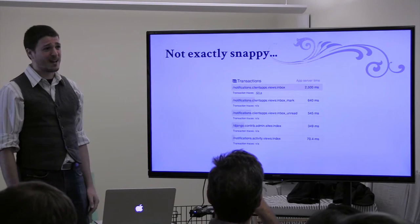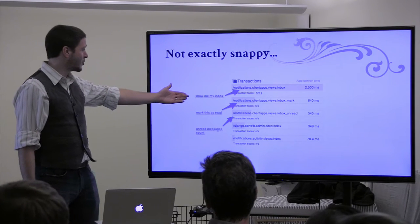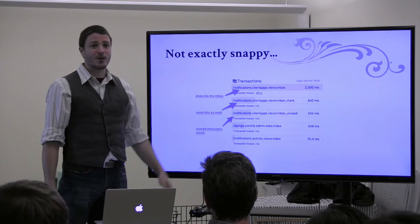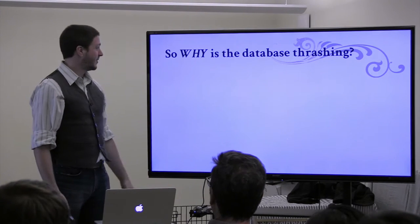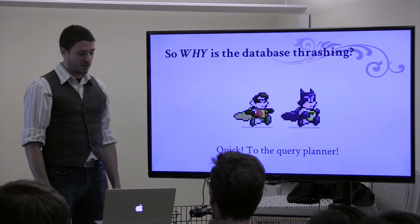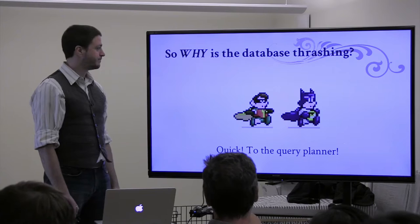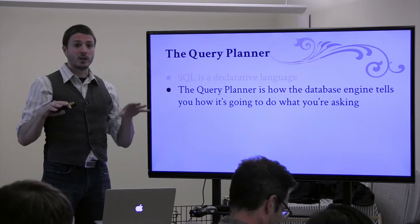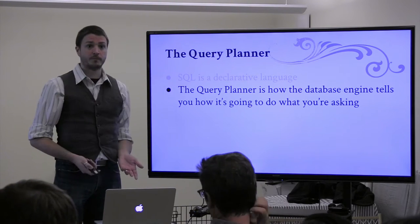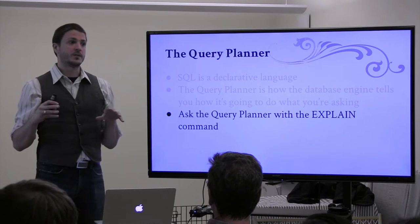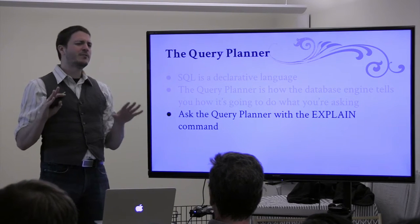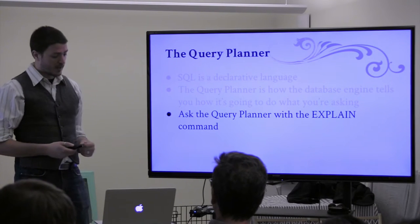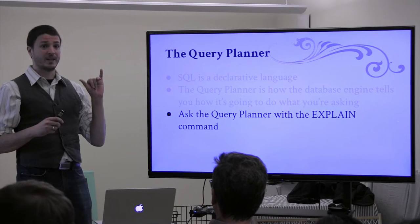The service wasn't handling tough things — just 'show me my inbox,' 'mark this as read,' and 'how many unread messages do I have?' and those were our average service times. This is bad. To find out why the database was thrashing, you have to go to the query. SQL is a declarative language — you tell it what you want and it figures out the best way to do it. The SQL engine gives us a query planner interface: you invoke it by prefixing any query with the word EXPLAIN. The things you're looking for are that sequence scans are bad and index scans are good.